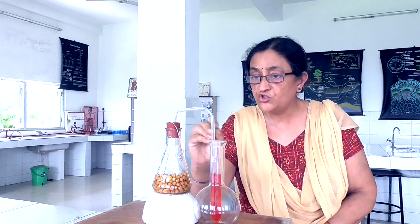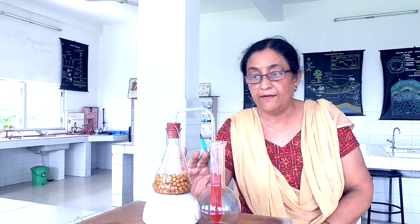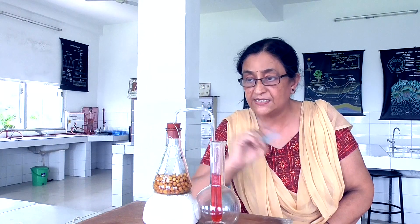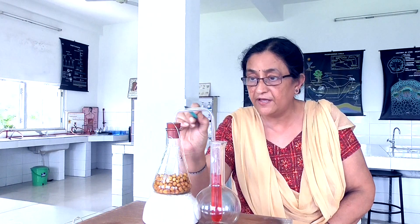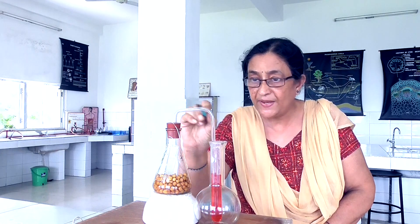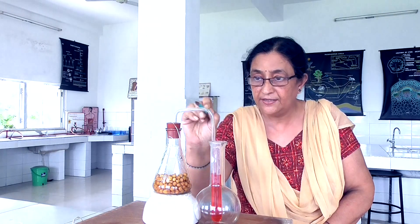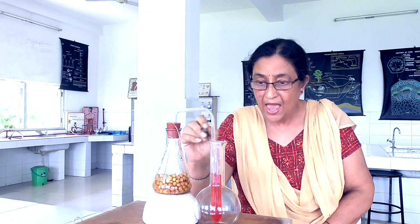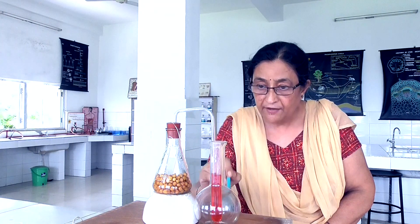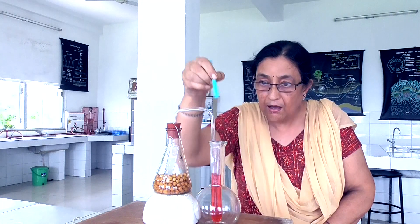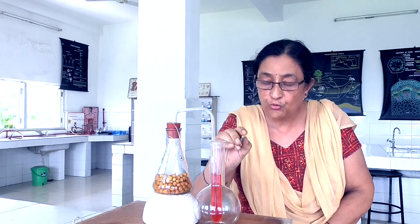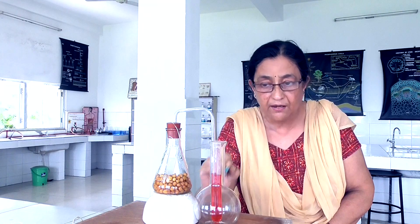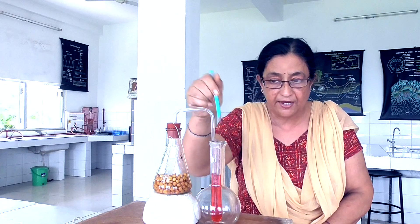The materials required to set up this experiment, as you can see here in front of you: one conical flask is taken, then you can see a rubber cock, then you can see a bent delivery tube — bent twice at 90 degrees. Then you can see one test tube, and the delivery tube is dipped inside the colored water. You can also take a beaker here; we have taken a test tube and kept it in a round bottom flask.